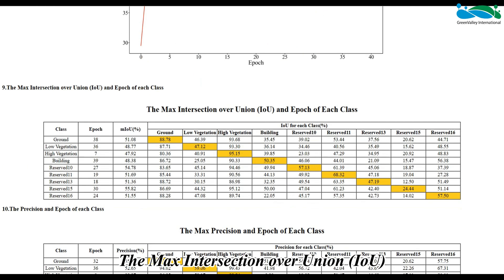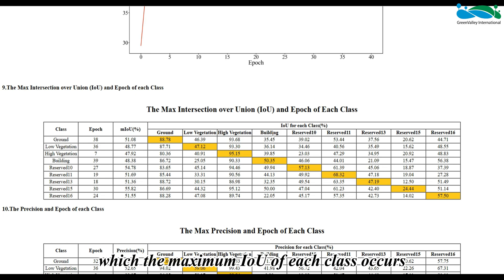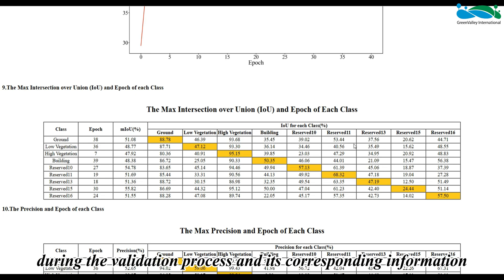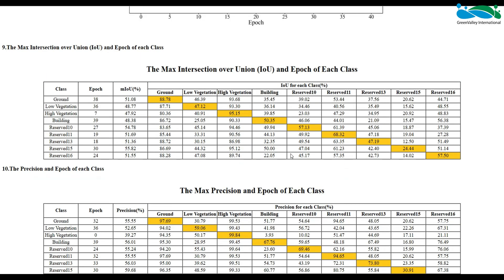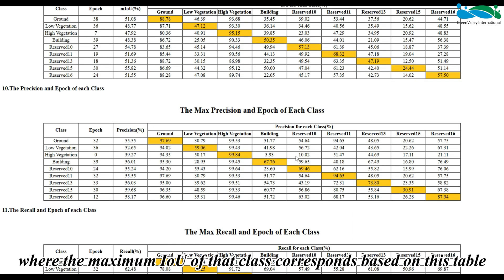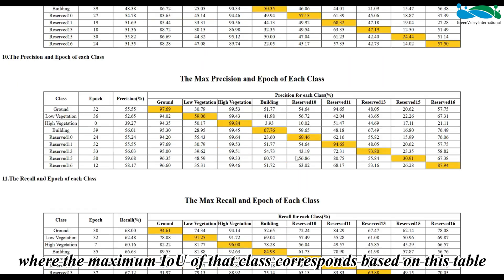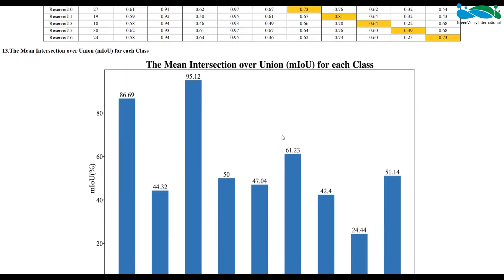The 'Max IoU and Epoch of Each Class' table records the epoch at which the maximum IoU of each class occurs during the validation process and its corresponding information. If you are concerned about the classification accuracy of a certain class during inference, you can select the model saved at the epoch where the maximum IoU of that class corresponds, based on this table.